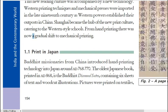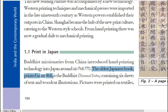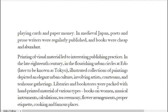Now let us see print in Japan. Buddhist missionaries from China introduced hand printing technology into Japan around 768–770 AD. Japan's oldest printed book was printed in 868 AD, and its name is the Diamond Sutra — a Buddhist book containing 6 sheets of text and woodcut illustrations. Pictures were also printed on textiles, playing cards, and paper money.